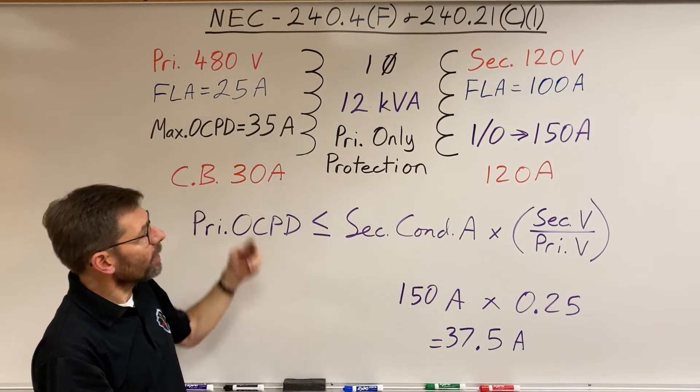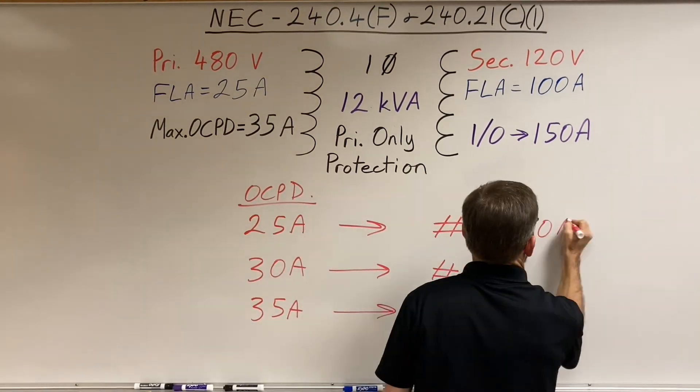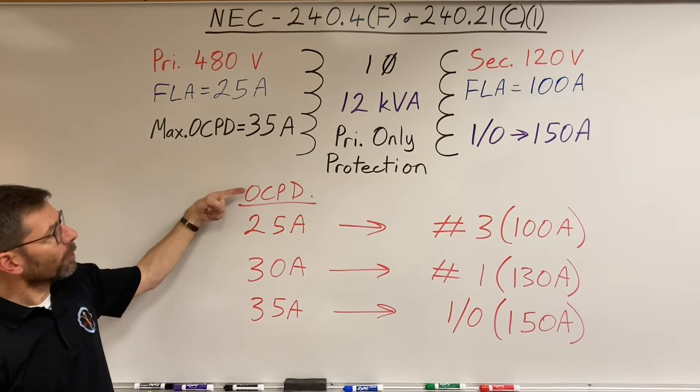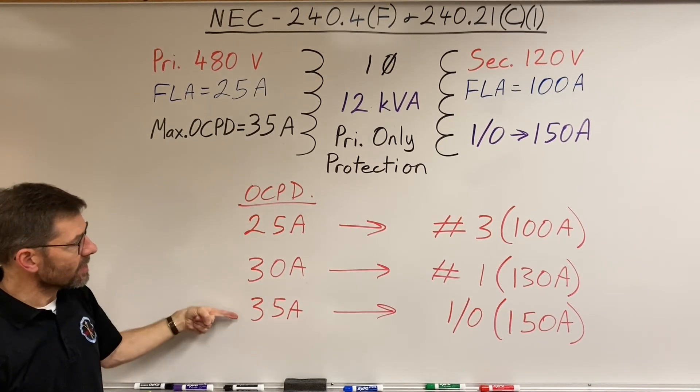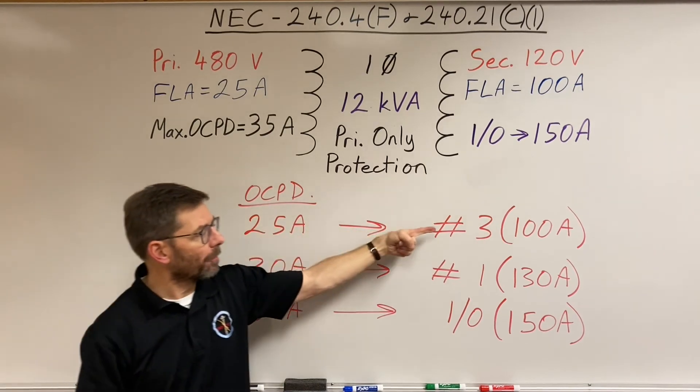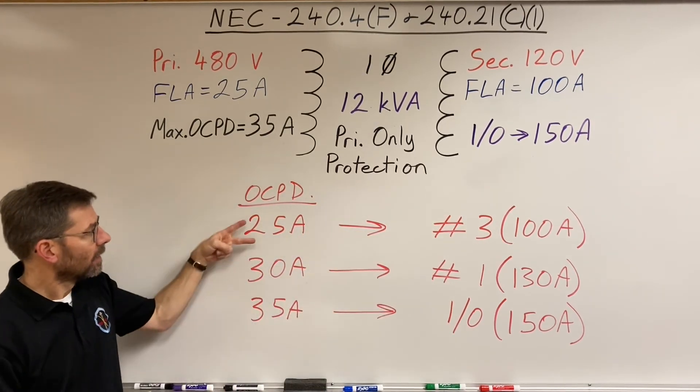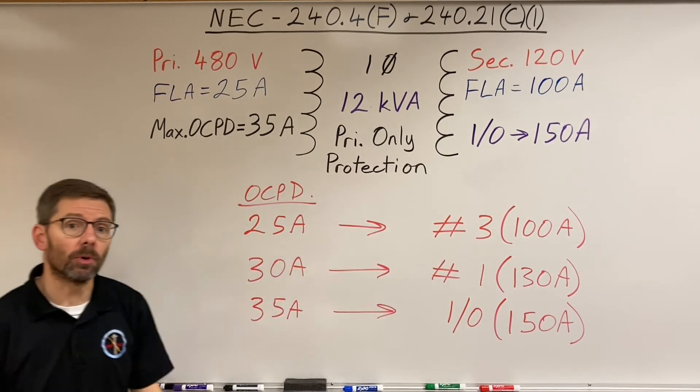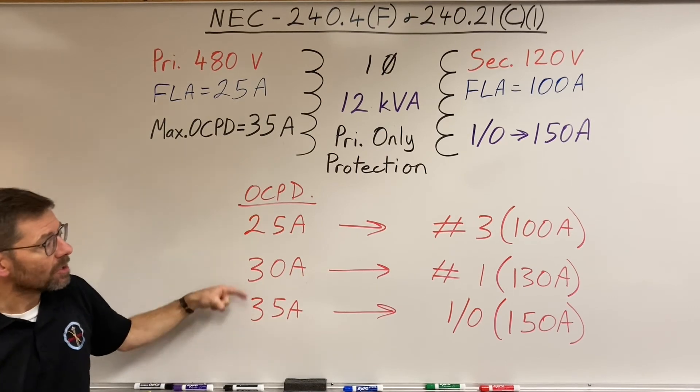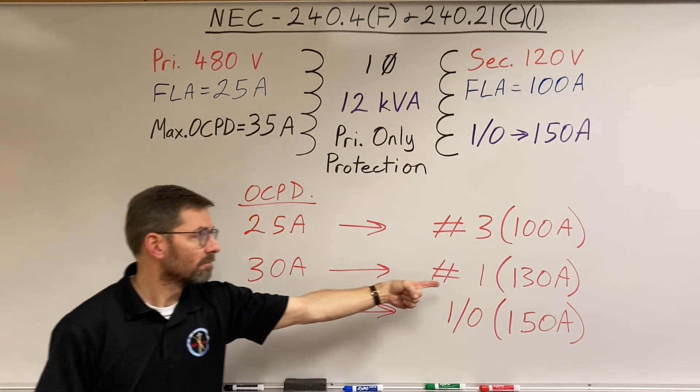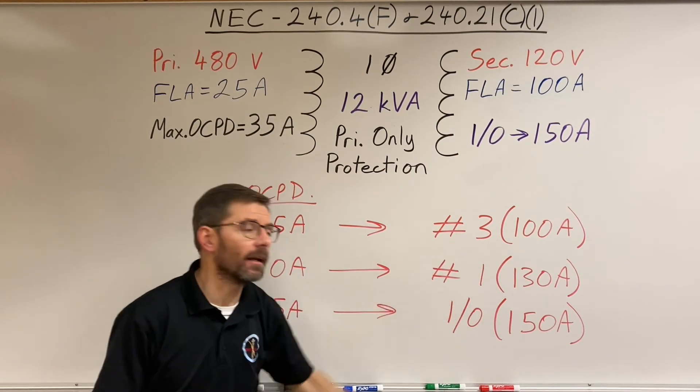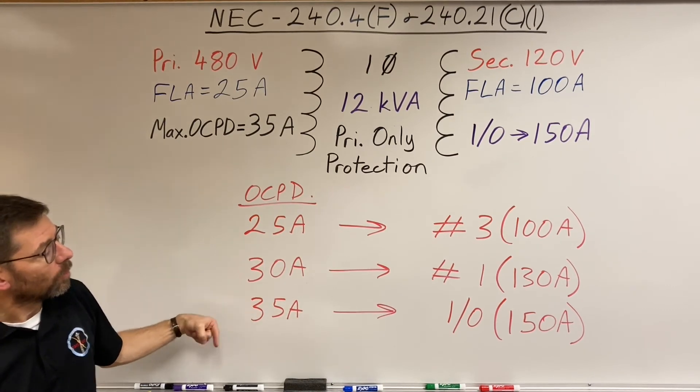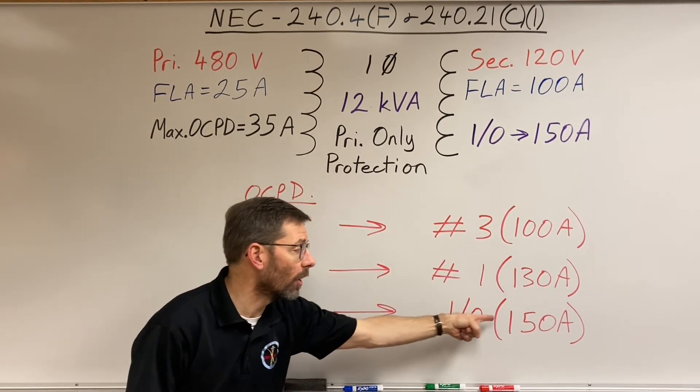I could essentially use a 30 amp breaker and do it this way. If my overcurrent protective device were these various sizes, that would be how big the secondary conductor would need to be. 25 amps would result in 100 amps on the secondary, 30 amps would require 120 amps, and a 35 amp would allow 140 amps. So I've got to use a one-aught for 150 amps.